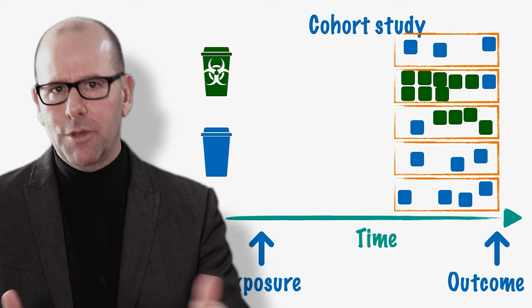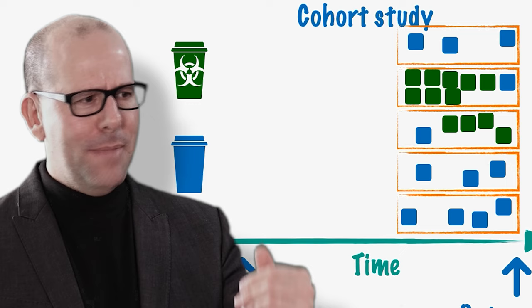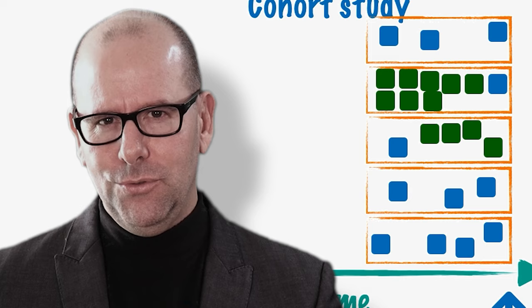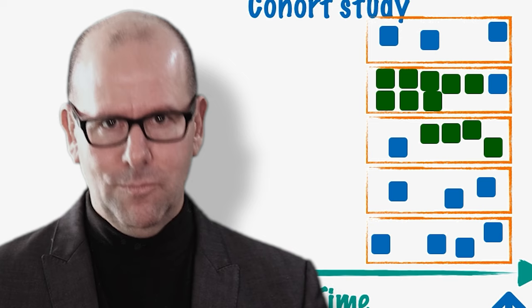With cohort studies you can look at rare exposures and multiple possible outcomes — for example, whether the mineral made their hair grow faster, affected their height, or caused cancer. This contrasts with case control studies, where the starting point is the outcome of interest, so you can have rare outcomes and look back at multiple possible exposures. In a cohort study, you can look at rare exposures and look for multiple possible outcomes — an important difference.